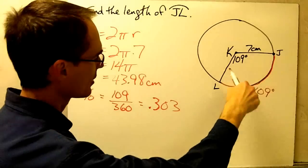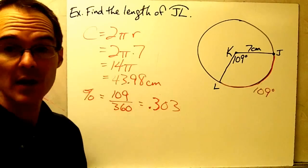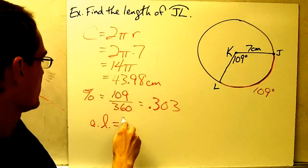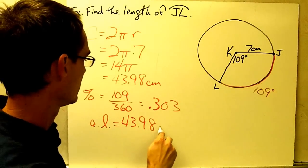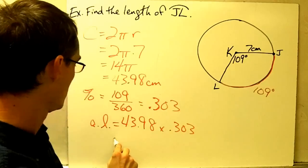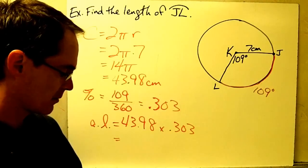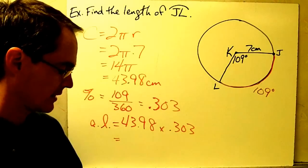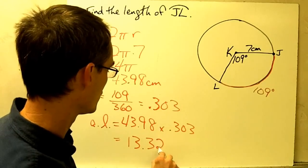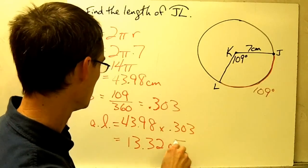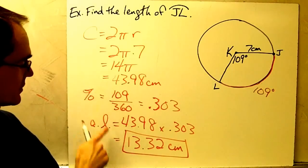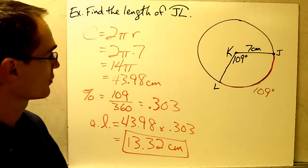Now I know what percent of the circle that arc is, so I can multiply that times my circumference to get my arc length. Arc length equals circumference 43.98 times the percentage 0.303, which equals approximately 13.32 centimeters — about 30% of the circumference of 43.98.